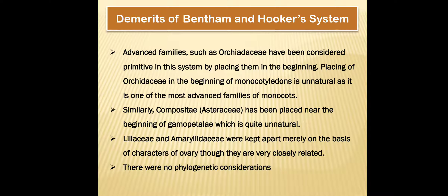With this we finish the complete classification of the Bentham and Hooker system. I request all students to learn it, go through the slides, and study it well. We will start with the study of various angiospermic families — seven families in total, two monocot and five dicot families. In the next lecture we will go through two families. If you have any questions or queries, please SMS or WhatsApp me. Thanks a lot for listening to this video.